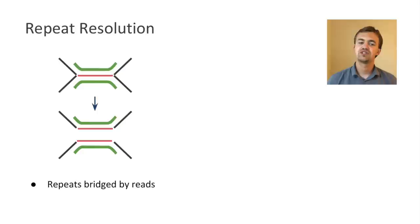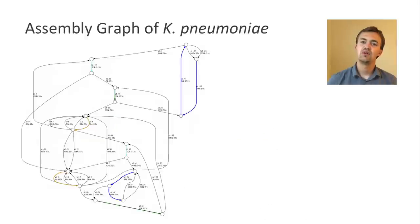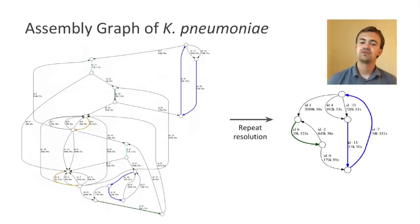And after the graph is constructed, we apply conventional graph simplification procedures such as resolution of repeats using bridging reads, like shown in this picture. We also have an additional algorithm called Trestle that attempts to resolve unbridged repeats based on the heterogeneity between the repeat copies. So here's an example of a typical bacterial repeat graph after it has been constructed. And as you can see, there are a few repeats of multiplicity 2, a little bit of multiplicity 3, and there's even a repeat of multiplicity 5.